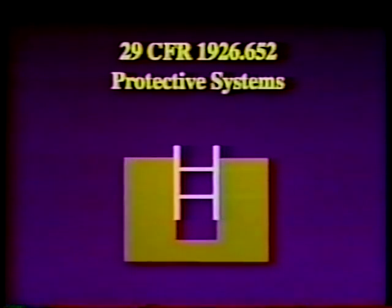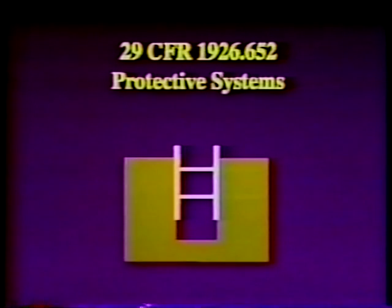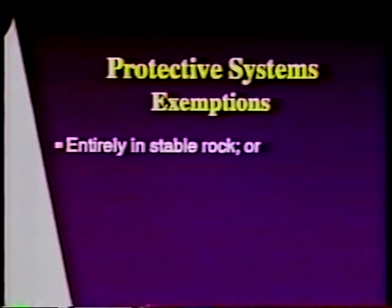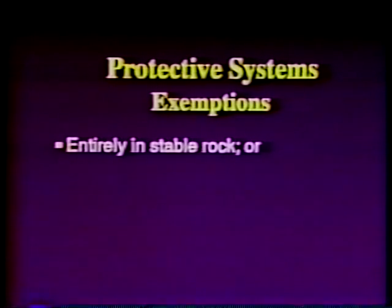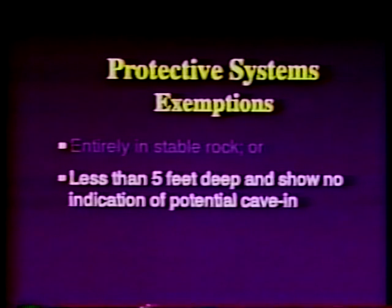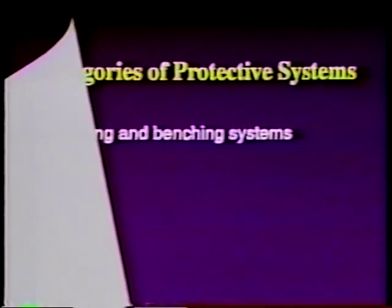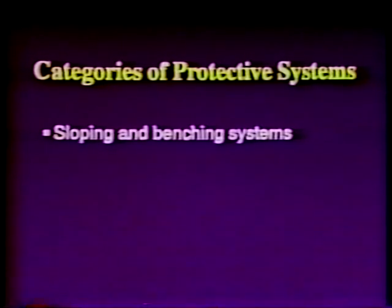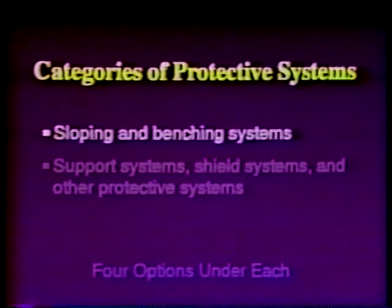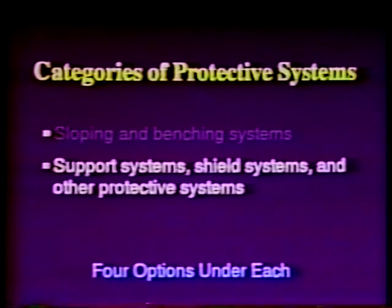OSHA Standard 29 CFR 1926-652 contains requirements for the protection of employees from cave-ins through the use of protective systems. OSHA requires that each employee in an excavation be protected from cave-ins by a protective system, except when excavations are made entirely in stable rock or excavations are less than five feet in depth and determined by a competent person to show no indication of potential cave-in. OSHA divides protective systems into two categories: sloping and benching systems, and support systems, shield systems, and other protective systems.